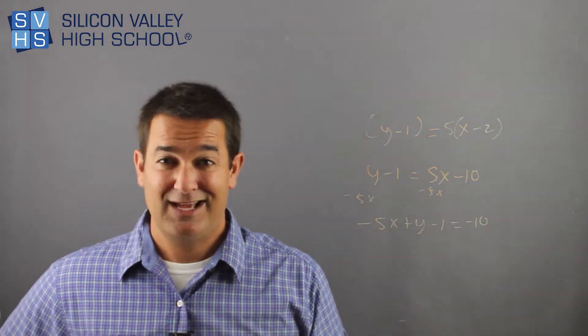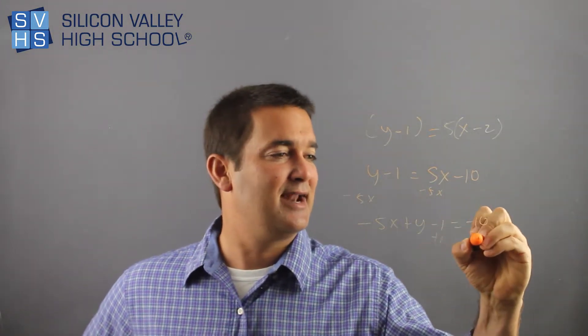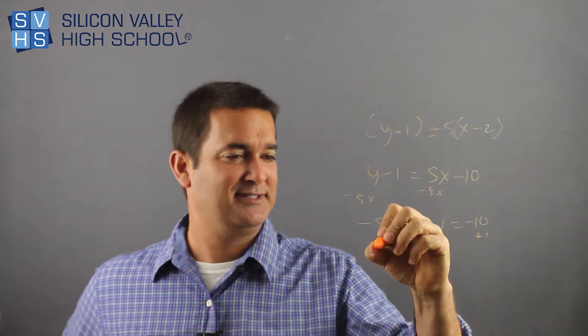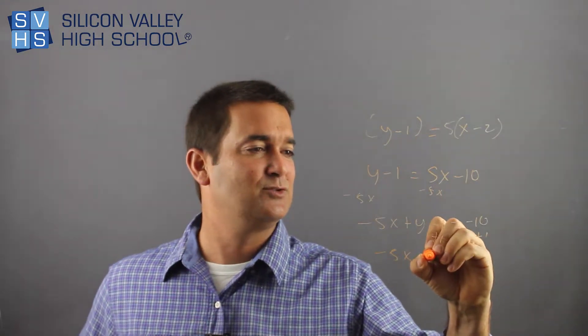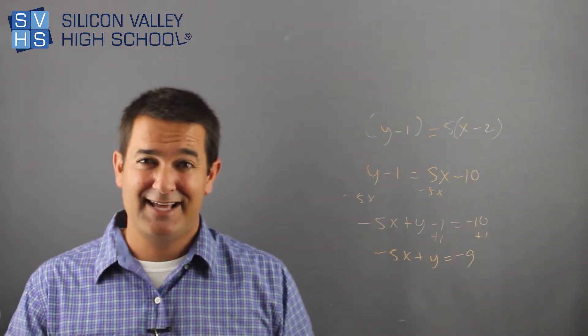So I have negative five x plus y minus one equals negative ten. This negative one is getting on my nerves, so I'll add this guy out of here. Working above, I'll have negative five x plus y equals negative nine. Is that done?